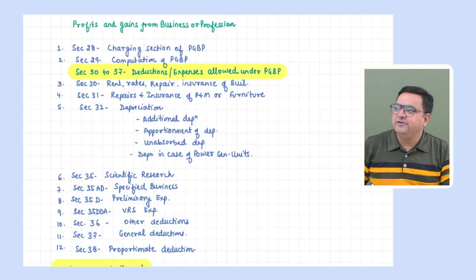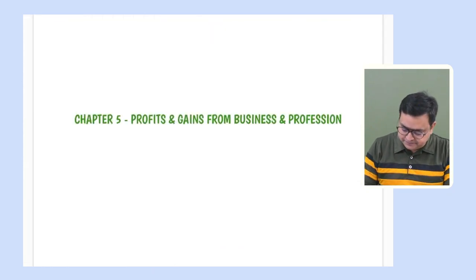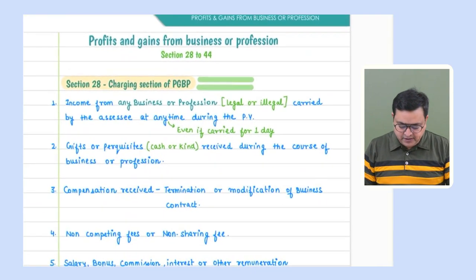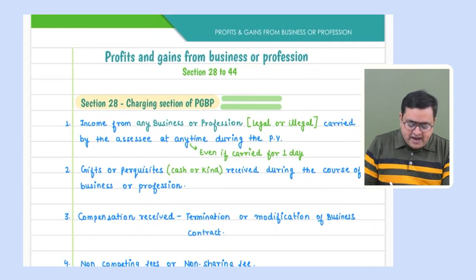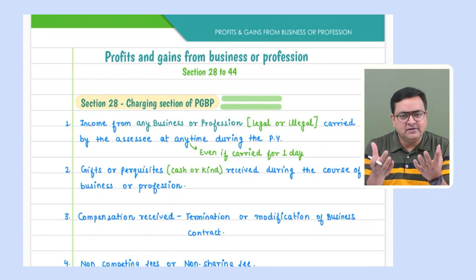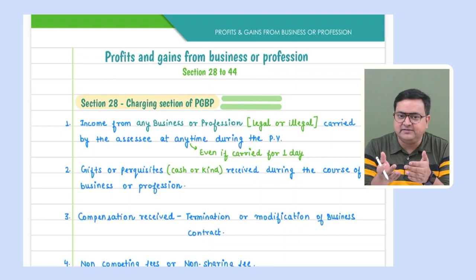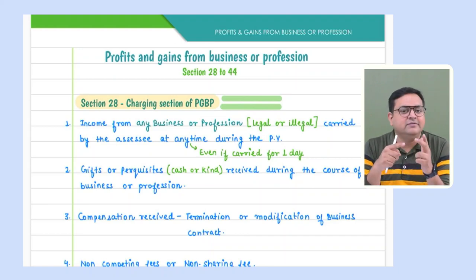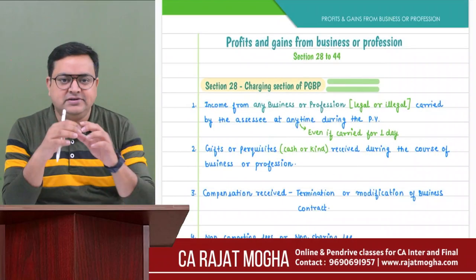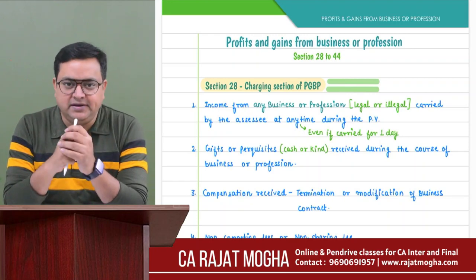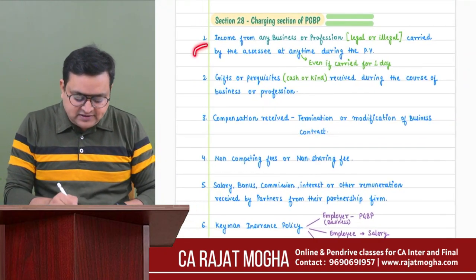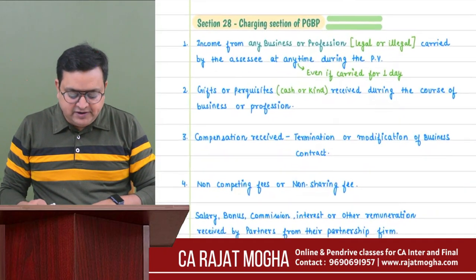Let's start with the very first charging section - section 28. You can download the handwritten book from the website in the download section. Section 28 is the charging section of PGBP. Just as we have done the charging section of salary and house property (section 22), section 28 tells us what type of income will always be taxable as PGBP income. I've jotted down the points here.